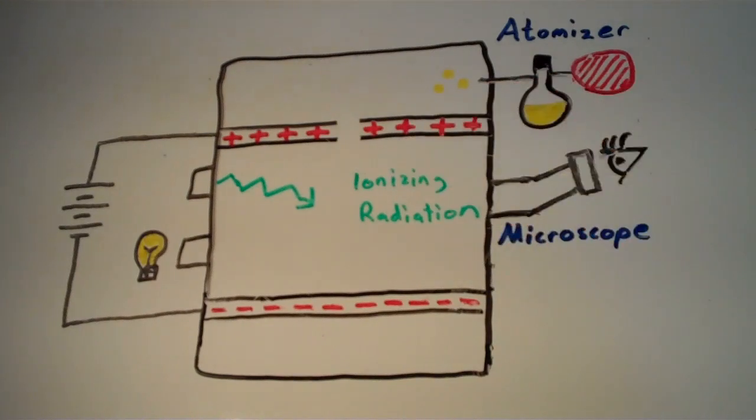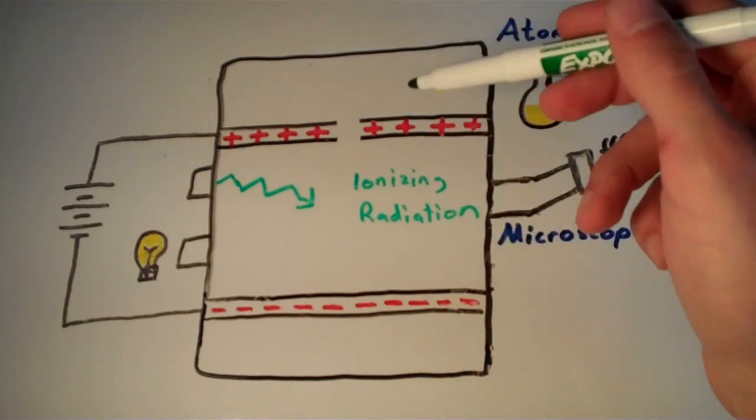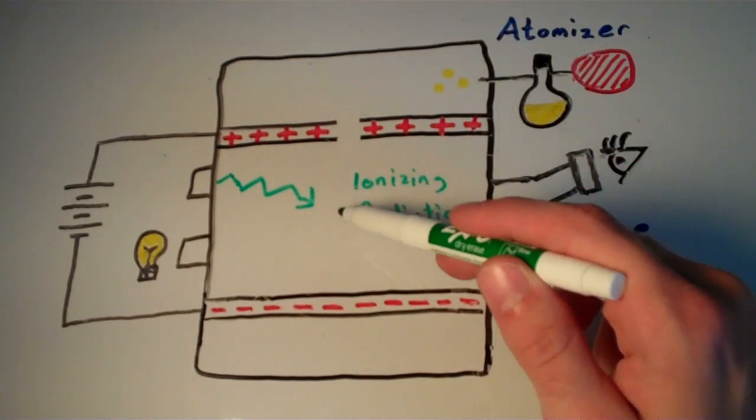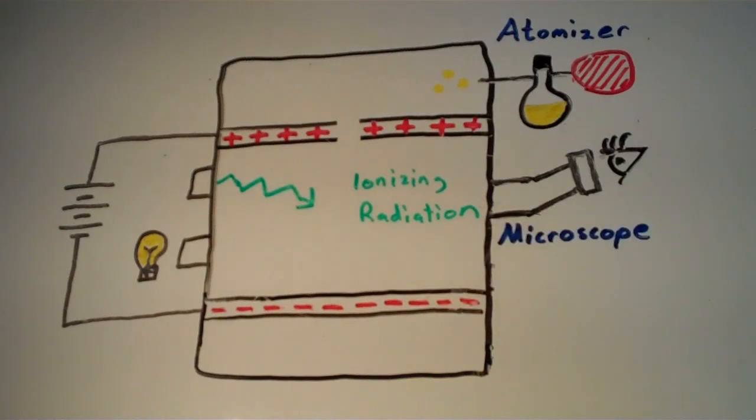And ionizing radiation is used to create the electrons that the droplets of oil collect. So when the air inside the apparatus is bombarded by this ionizing radiation, it produces electrons. And the oil droplets collect those electrons as they fall down into the lower part, into the negatively charged plate.